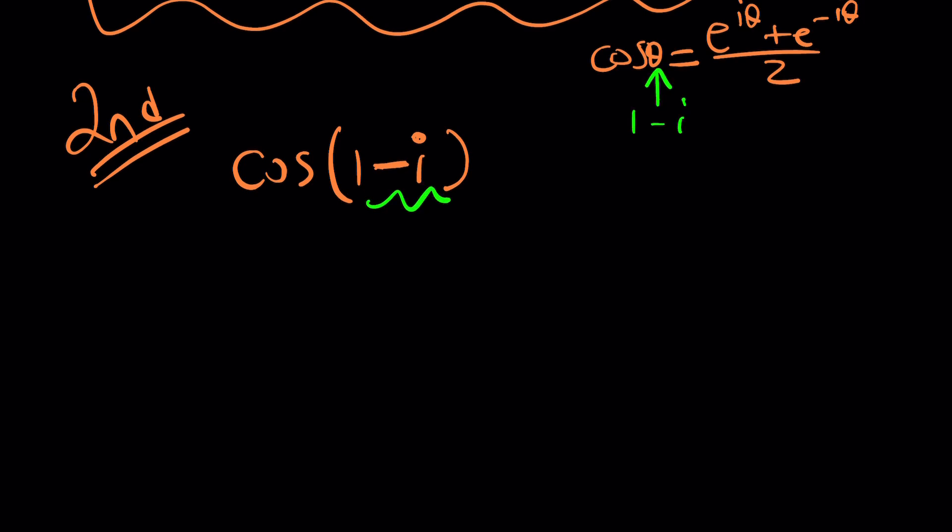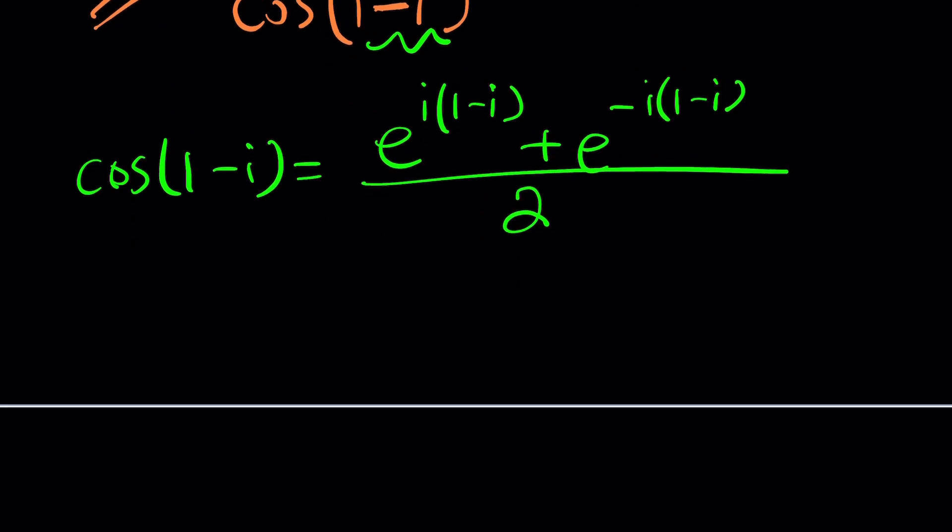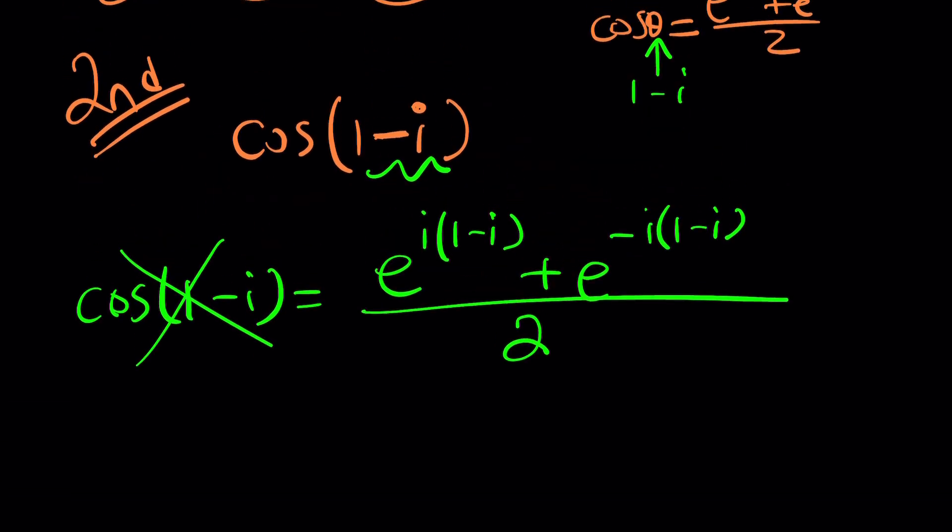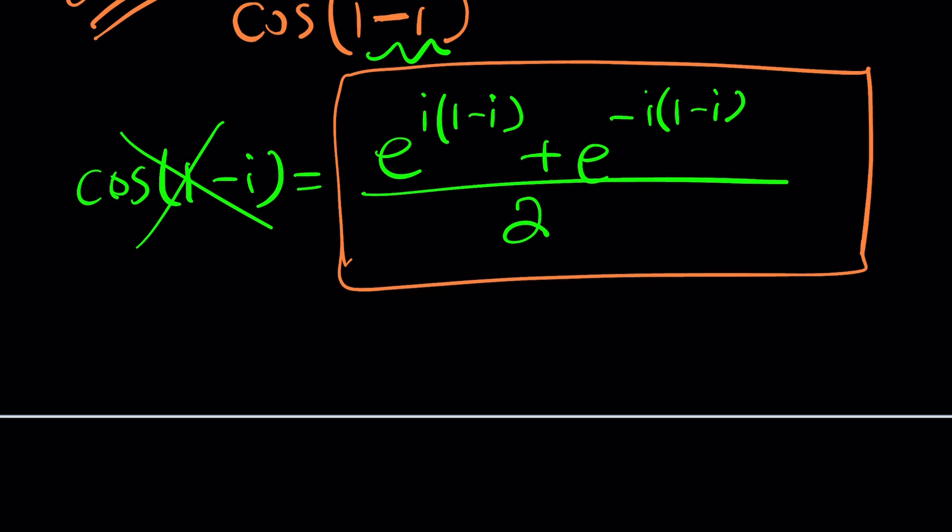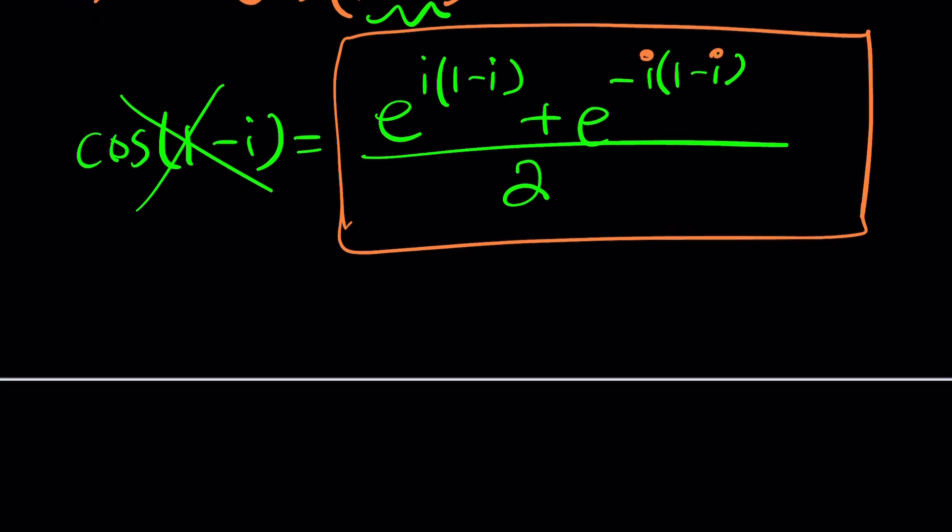Now, we're going to replace theta with one minus i. So let's do it everywhere. So cosine of one minus i will be e to the power i times one minus i plus e to the power negative i times one minus i. All of that is divided by two. Beautiful. Now, we can totally forget about this cosine nonsense and focus on the exponential because Euler, you know, is Euler's number. Euler is awesome. That's why he came up with these formulas. Imagine if he lived today and what would he come up with, right?